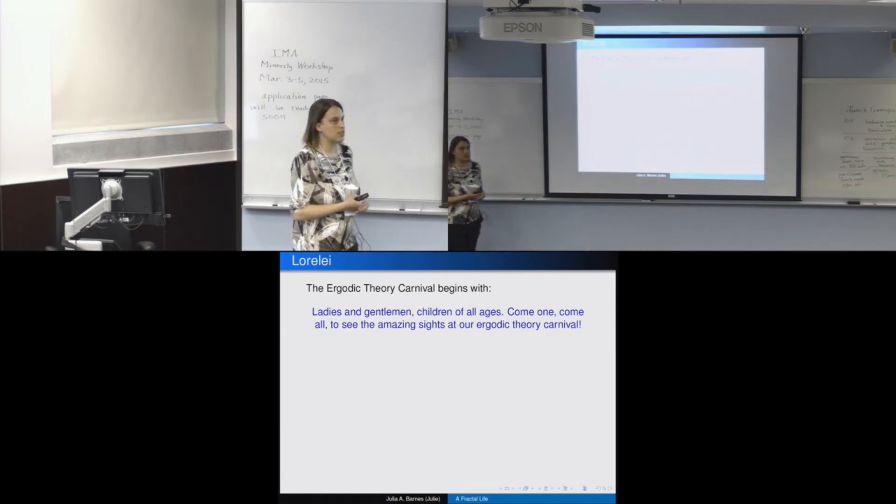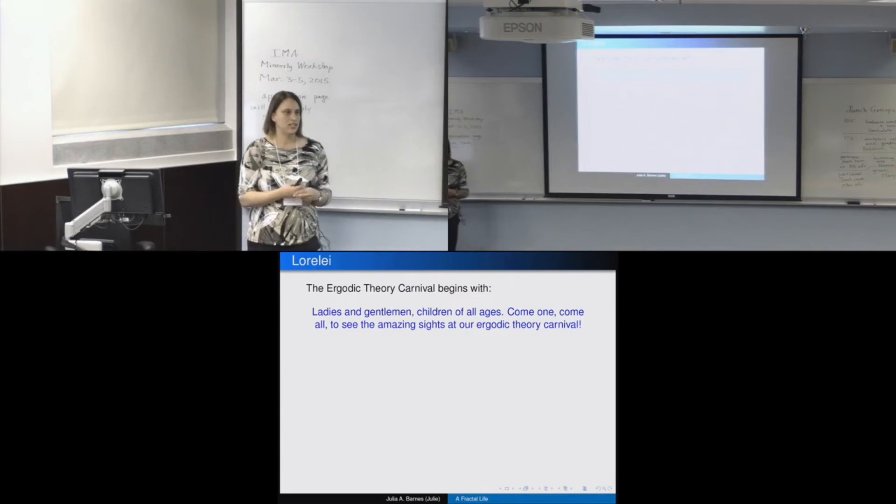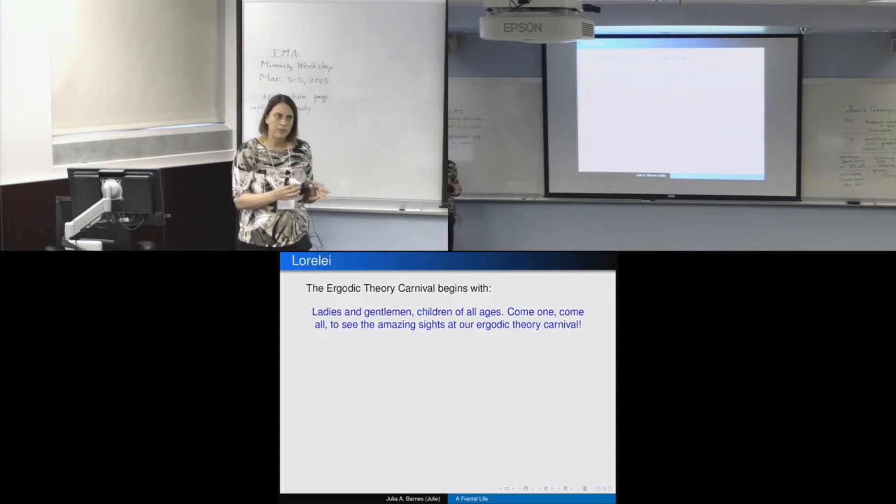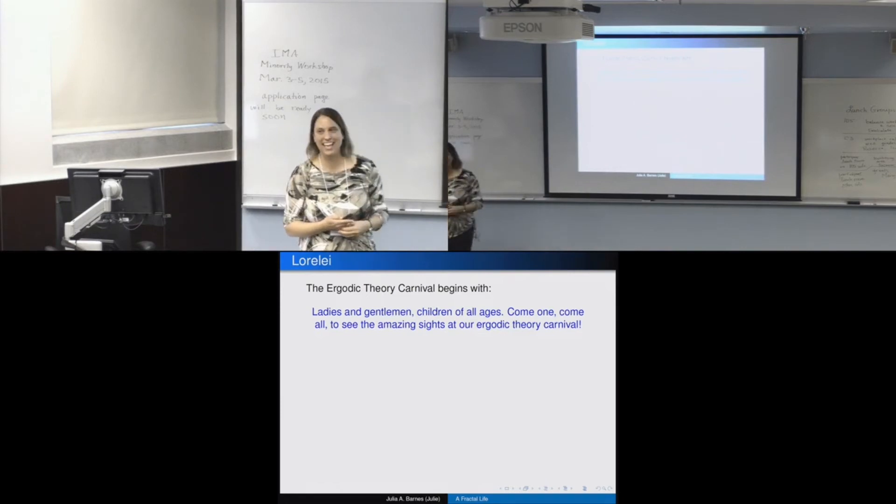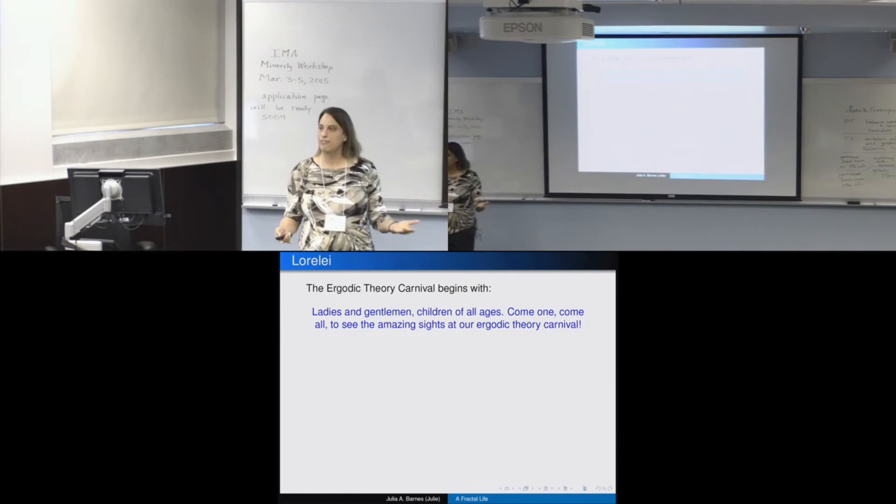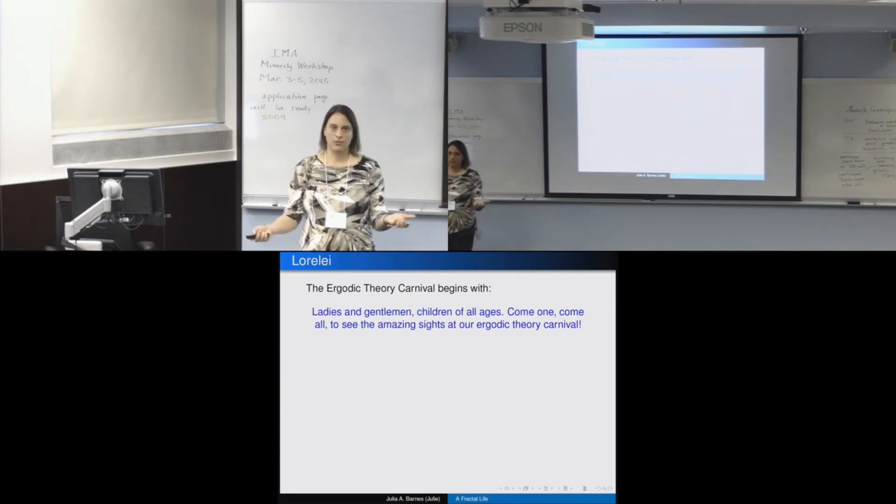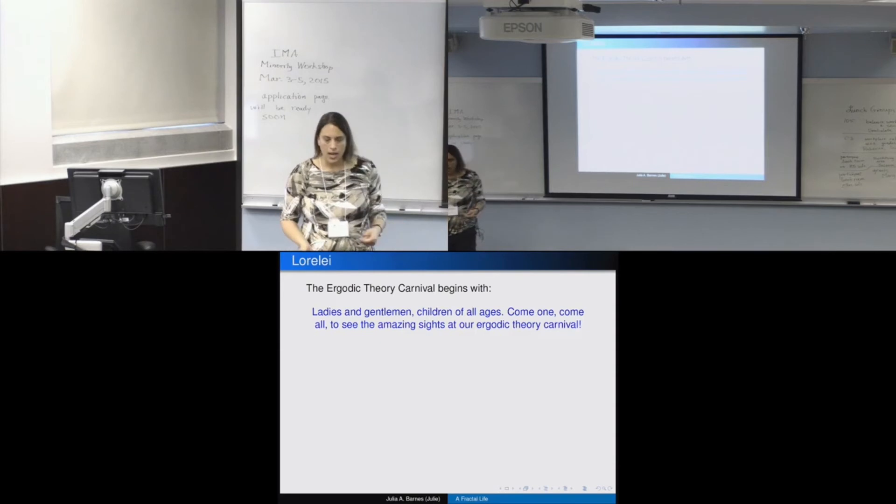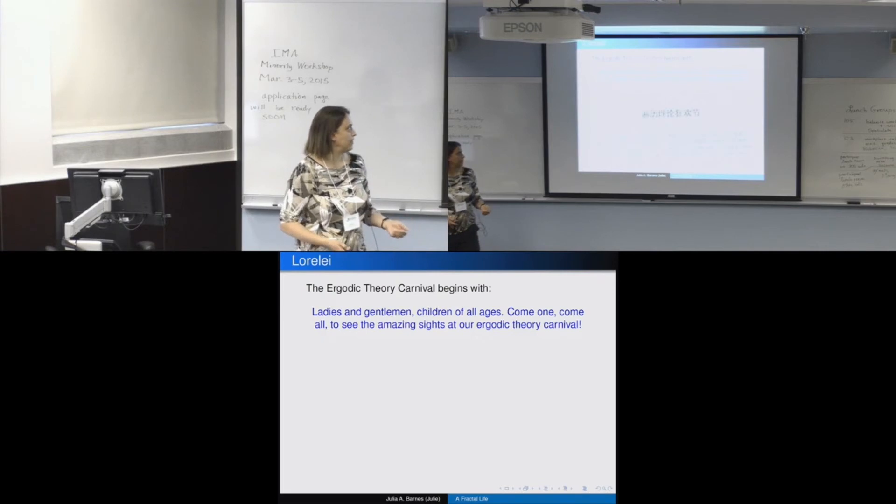So a little more on that. One of those survey articles was called the ergodic theory carnival. And what we did is we took ergodic theory topics and we put them in a setting of a carnival, like a carousel and a taffy pole. And we related all of the definitions to these objects. And we wrote it. This is the first line of the paper. Ladies and gentlemen, children of all ages, come one, come all to see the amazing sights of our ergodic theory carnival. This is a math paper. And there is serious math in it. But we were having fun. I mean, really, that's actually been the behind most of what I've done. Hey, why not? This is fun. And somebody else is enjoying it. So let's keep doing it. We're helping somebody even though we're having fun. In fact, we had referees that wanted more carny talk. We had to keep going back and adding more carnival lingo throughout the entire paper.